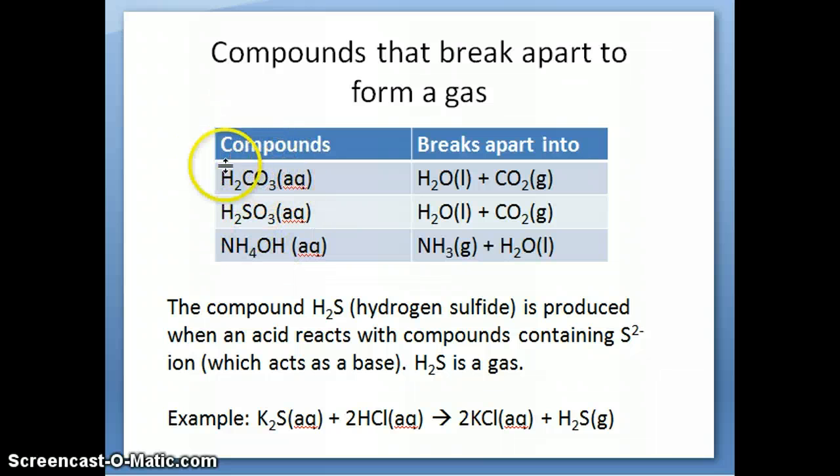So, instead of writing this as your product, you would write it as H2O and CO2. Another compound that is often produced in acid-base reaction is the H2S, hydrogen sulfide. Now, this actually is produced as a gas. So, again, you might think it's aqueous, but it's actually a gas. So, another thing you need to remember. So, for example, in this reaction, K2S plus 2HCl, we swap the cations. We get H2S and then KCl. In a double displacement reaction, and the H2S would then be in the gas form.